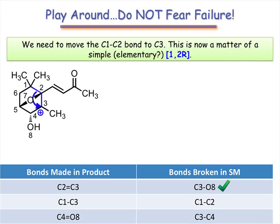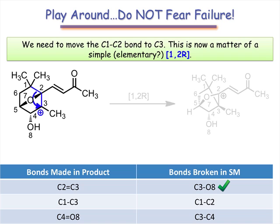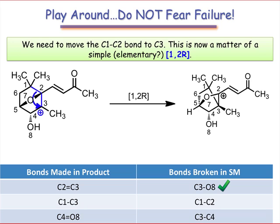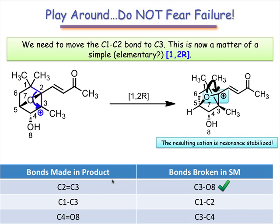A 1-2R step leads to the migration of the C1C2 bond to C3. The resulting intermediate is shown here. Additional evidence that we're traveling the correct path is the resonance stabilization of this cation — a lone pair from the adjacent oxygen atom can participate in resonance.